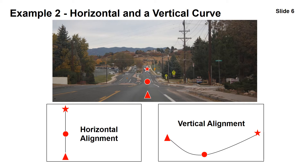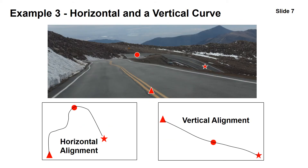Here's another example showing horizontal alignment and vertical alignment. From the horizontal perspective, it's very simple — a tangent section along those three points. But in the vertical perspective, there's again a sag vertical curve, similar to the first example. A third example shows a lot of complexity in the horizontal alignment perspective connecting those three points, while in the vertical alignment perspective it's essentially a continuous downgrade, with some changes in longitudinal grade but primarily a consistent downgrade.